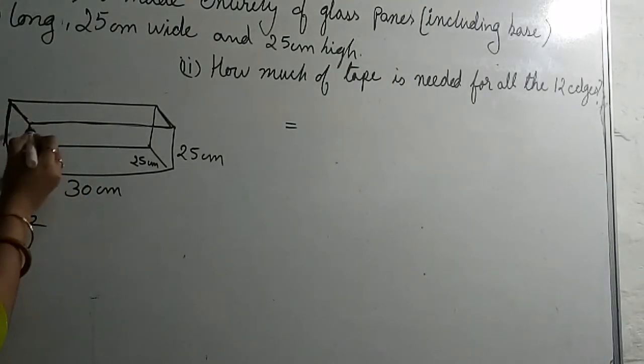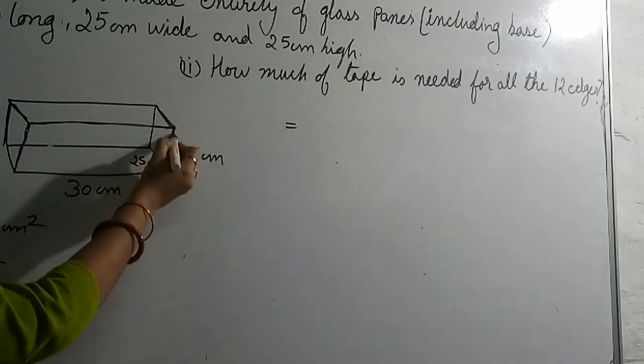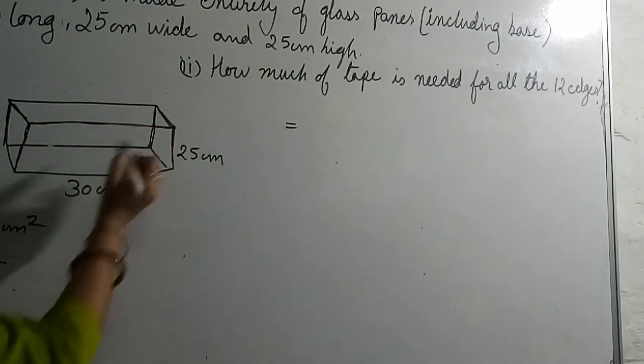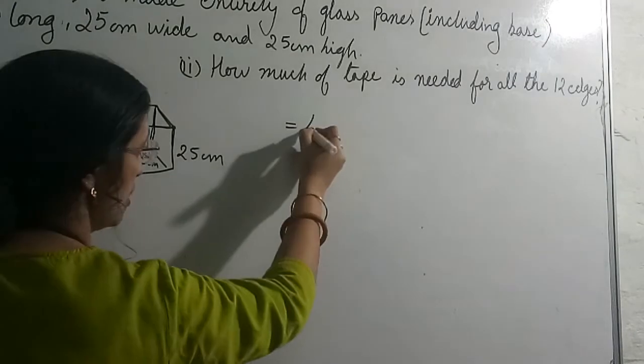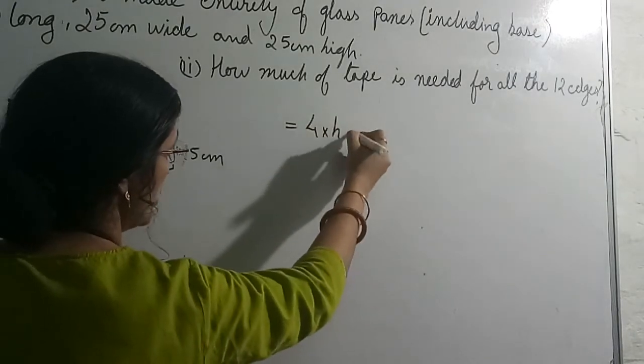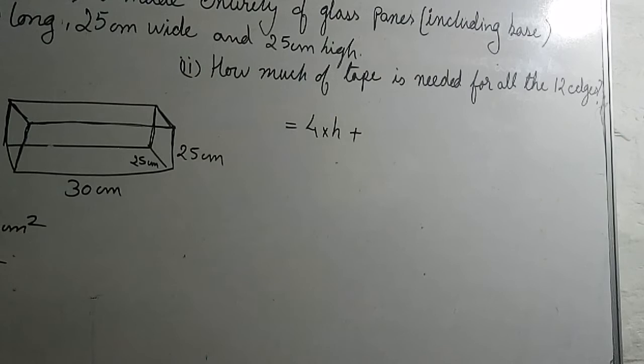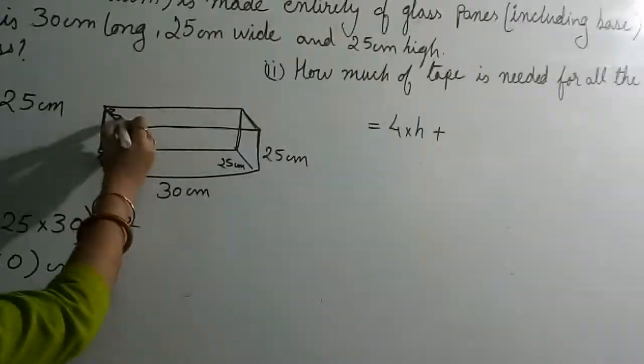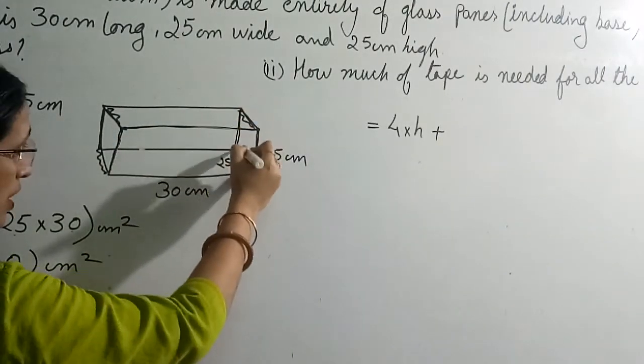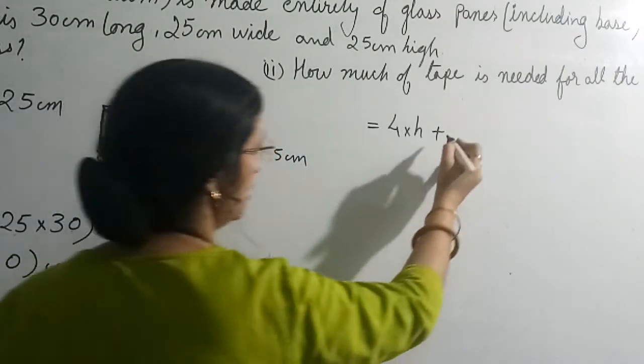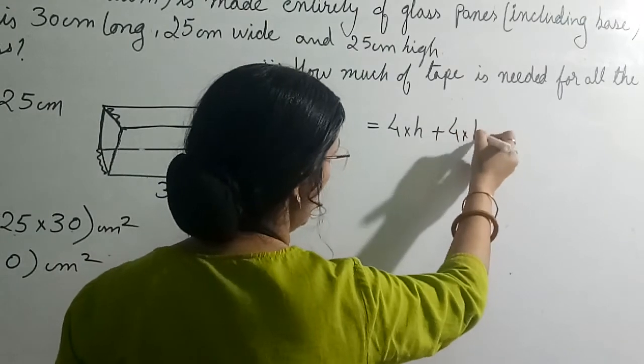Height, how much? Count it: 1, 2, 3, and 4. This means 4 times height is coming, that means 4 into H. Plus, the width, how many times? See here: 1, 2, 3, and 4. That means 4 into B.